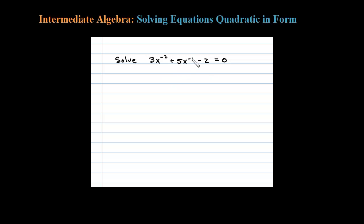Here I'm going to solve this by substitution. We're going to let u equal the middle term, x to the minus 1 power, so that u squared then would be x to the minus 1 squared